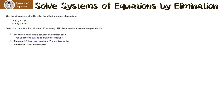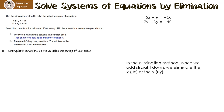Use the elimination method to solve the following system of equations. The first thing we have to do is line up the variables so that they're on top of each other. We're lucky here because the x's and y's already line up. In the elimination method, when we add straight down, we want to eliminate either the x, getting 0x, or the y, getting 0y. Right now when I add down, I end up with 12x minus 2y equals negative 56, so that's not what we want.